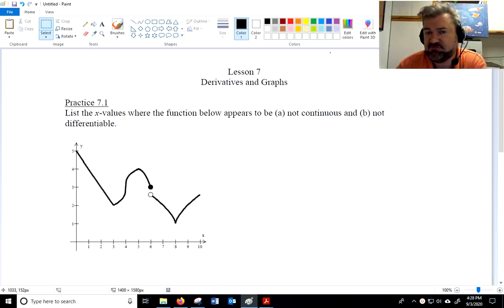We're going to continue making connections between derivatives, their graphs, and points where the derivative is not defined, a place where we say the function is not differentiable. So right off the bat, I want you to practice. I want you to label the x values where this function appears to not be continuous and appears to not be differentiable.